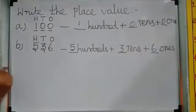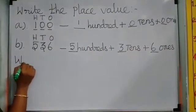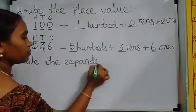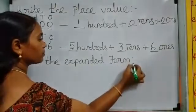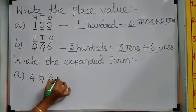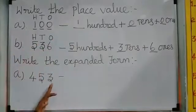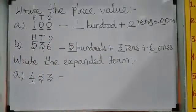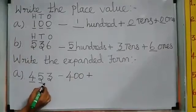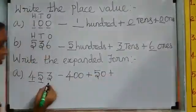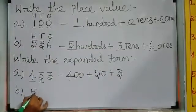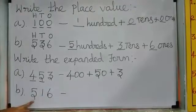Now we will go to the expanded form. We are writing in numbers. So, 4 × 100 — write 400. Plus how many 10's? 5 × 10's — write 50. Plus how many 1's? 3 × 1's — write 3. So the expanded form is 400 + 50 + 3.